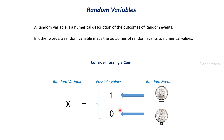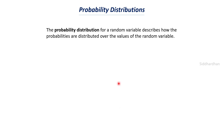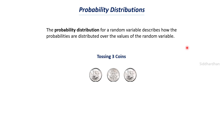Now let us discuss what is meant by probability distribution when it comes to a random variable. The probability distribution for a random variable describes how the probabilities are distributed over the values of the random variable. This means we have different values for a random variable for a particular event, and we try to find out how the values are distributed. Let's try to understand this with an example.